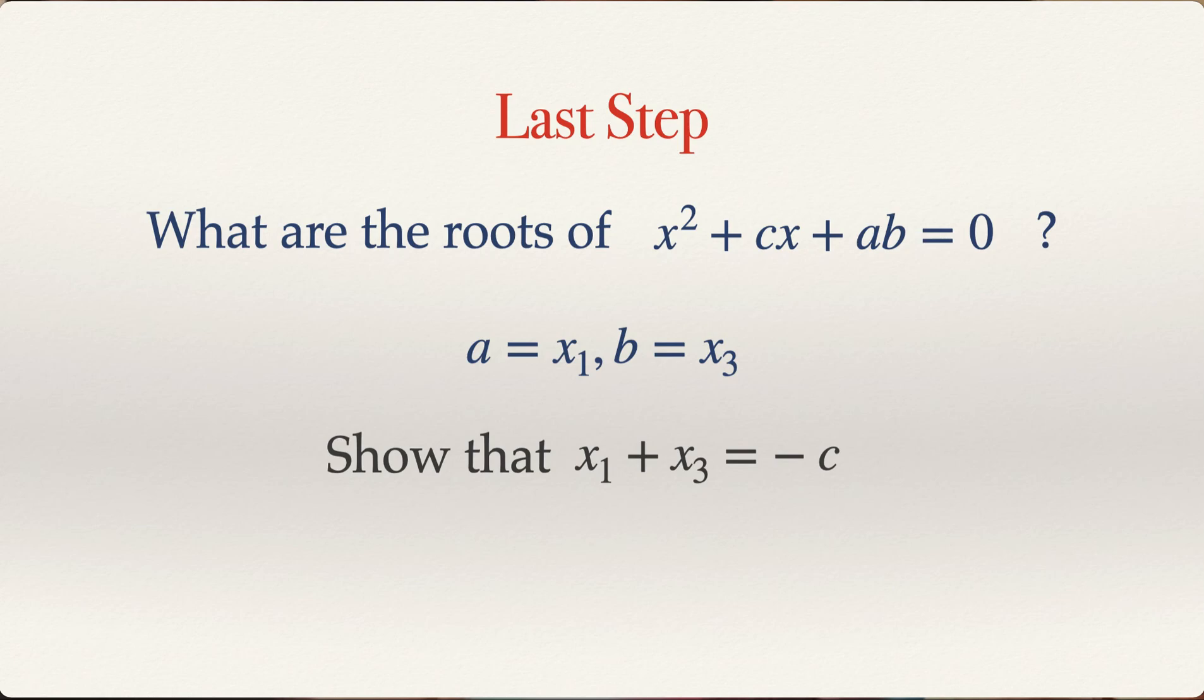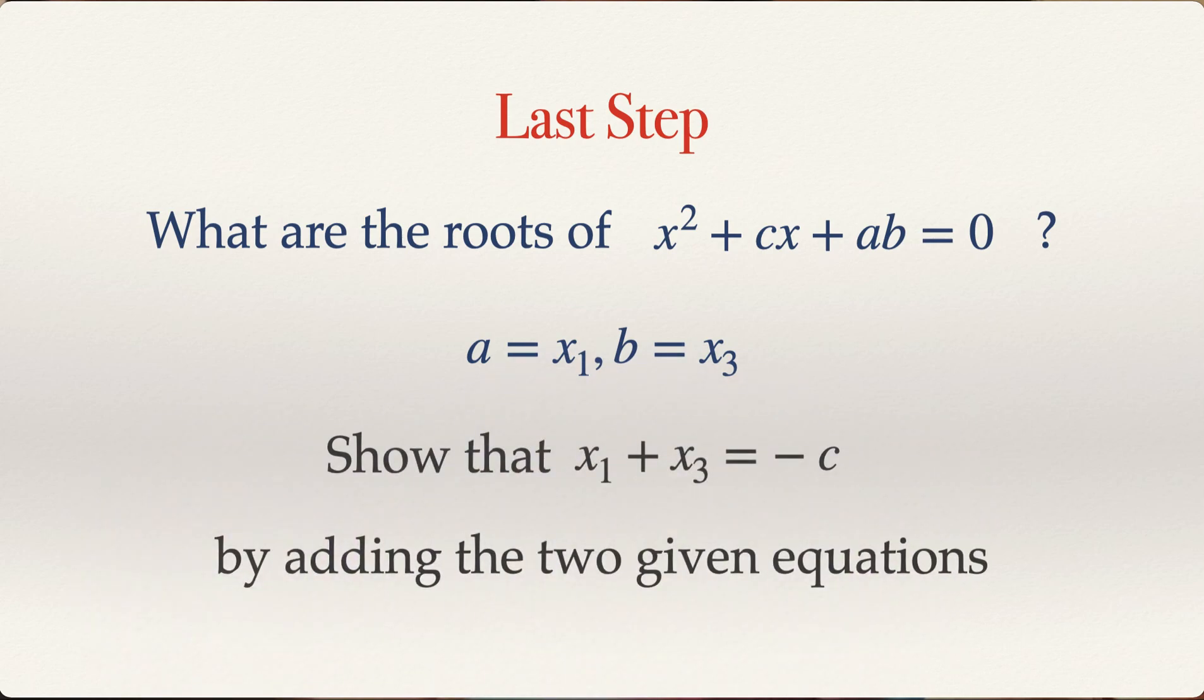So how do you show that? How do you show that x1 plus x3 is equal to minus c? Well, you just add the two given equations and apply the same strategy that we did apply when we subtracted. So can you do this last step to show that x1 plus x3 is equal to minus c? And say it in the comment in the description. Give it a try.